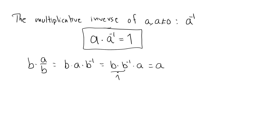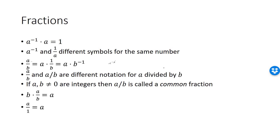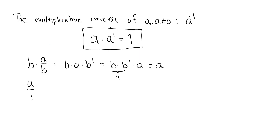Our next fraction rule tells us that any number A divided by 1 is equal to the same number A. By definition, A divided by 1 is equal to A times 1 inverse. The multiplicative inverse of 1 is 1, since 1 times 1 is 1. So this is equal to A times 1, which is equal to A.